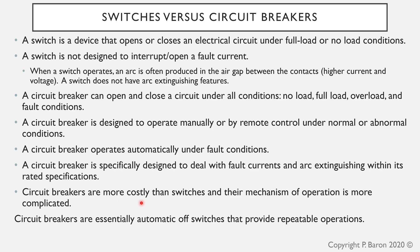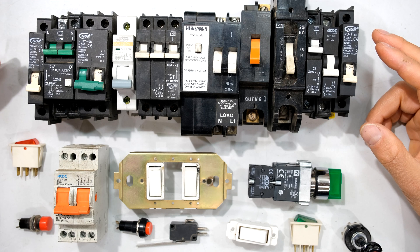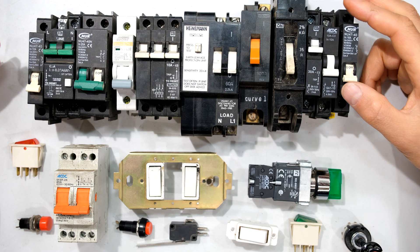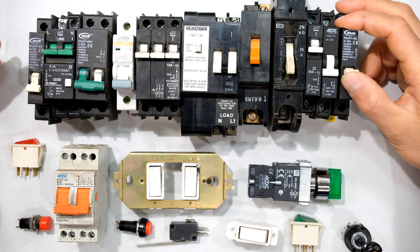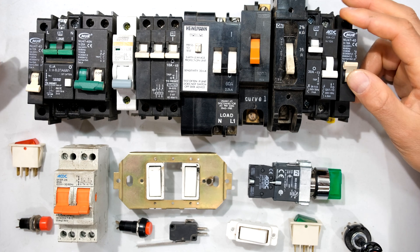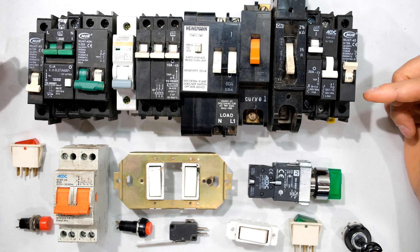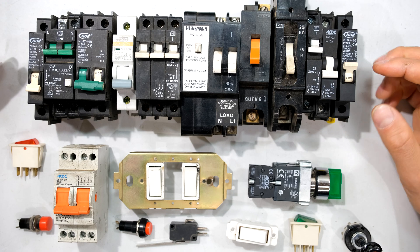This is one of the reasons why a circuit breaker is much bigger — the construction is more elaborate, circuit breakers are more costly than switches, and the mechanism of operation is more complex. Circuit breakers are essentially automatic off switches that provide repeatable operation.